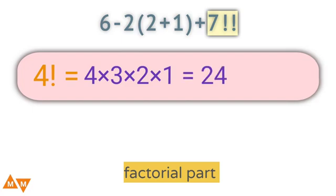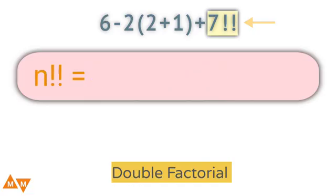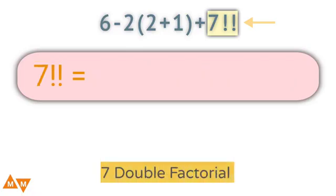But here we have double factorial. Now the double factorial of a number n is the product of all the positive integers up to n that have the same parity as n. For example, 7 double factorial can be written as 7 times 5 times 3 times 1, which equals 105.